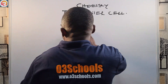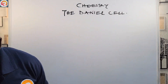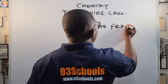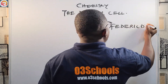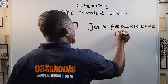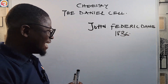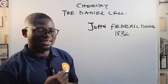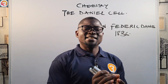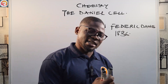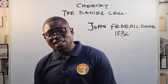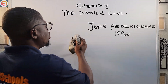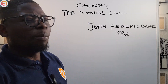The Daniel cell was invented by a man called John Frederick Daniel in the year 1836. John Frederick Daniel designed the Daniel cell in 1836. The Daniel cell is a perfect example of an electrochemical cell because it converts chemical energy into electrical energy.